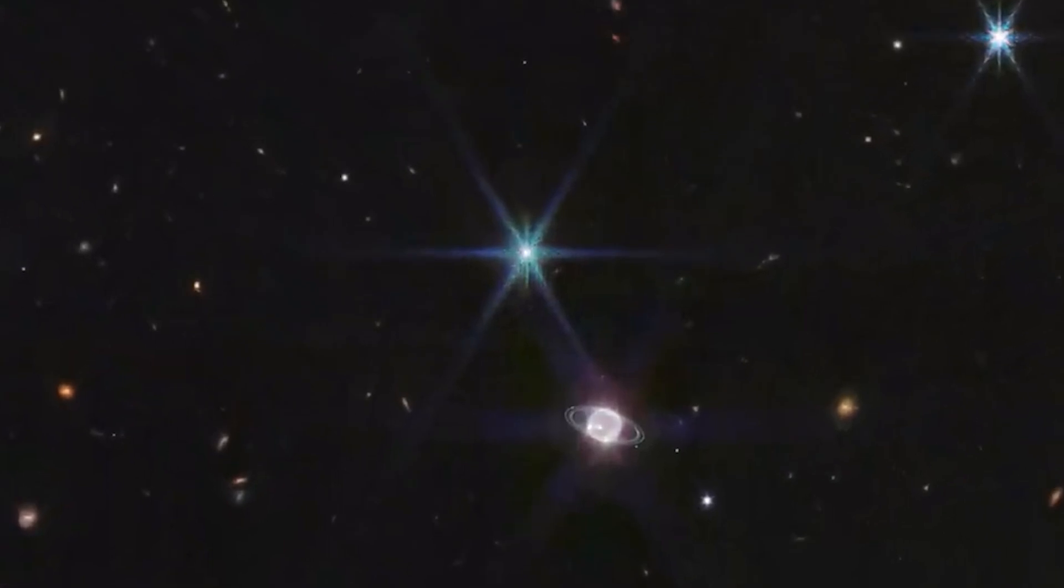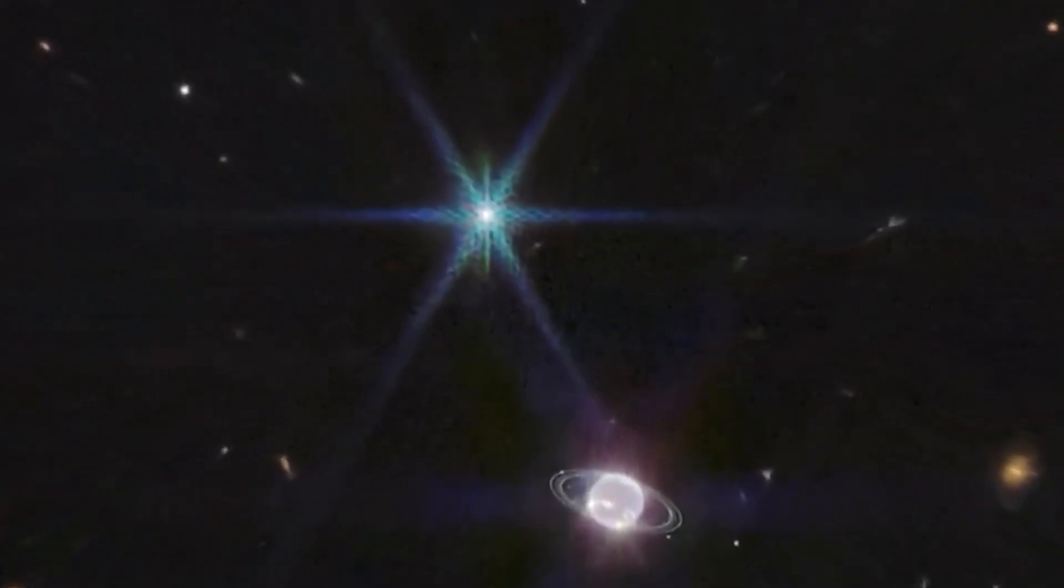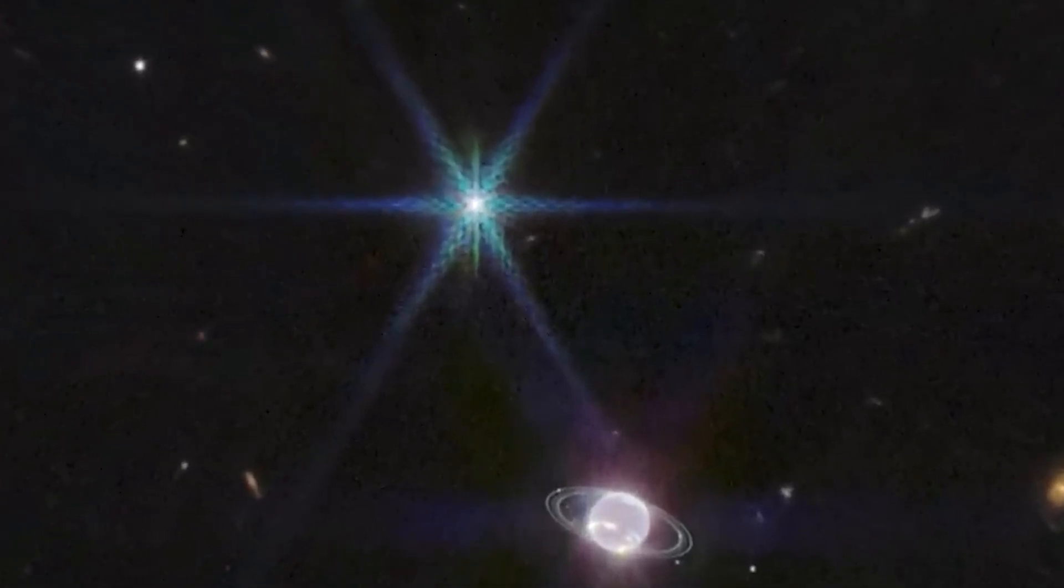Triton's capture by Neptune likely had a significant impact on the planet's moon system. In the past, Neptune may have had more moons, but Triton's arrival could have disrupted their orbits, either ejecting them into space or causing collisions.